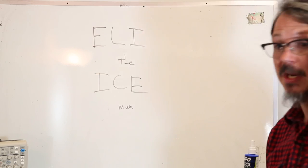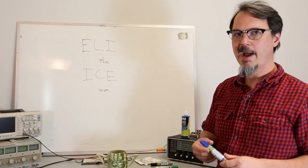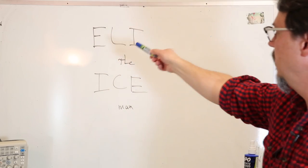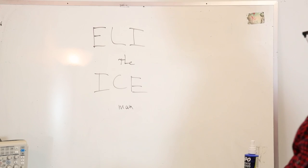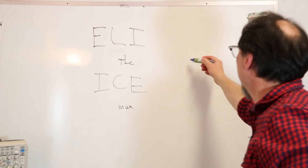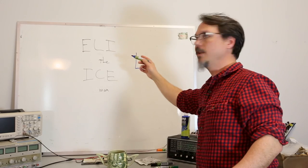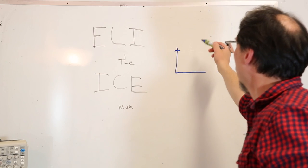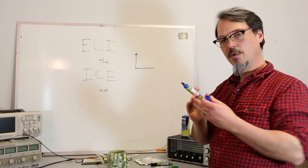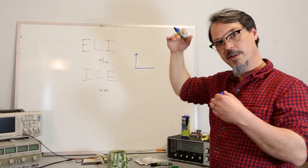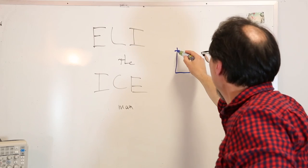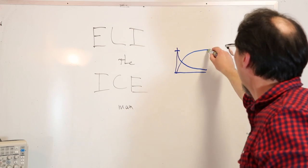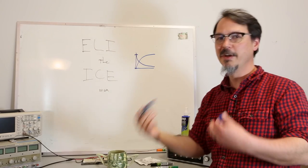Eli the Iceman, what does that actually mean? What you should read that as is for an inductor L, voltage E leads current. If you apply a voltage, that voltage is immediately going to be seen across the inductor. This is T equals zero. As time goes forward, the current will slowly start to ramp up. The voltage is going to start high and go down, and current is going to start low and go up. In fact, they're 90 degrees out of phase.